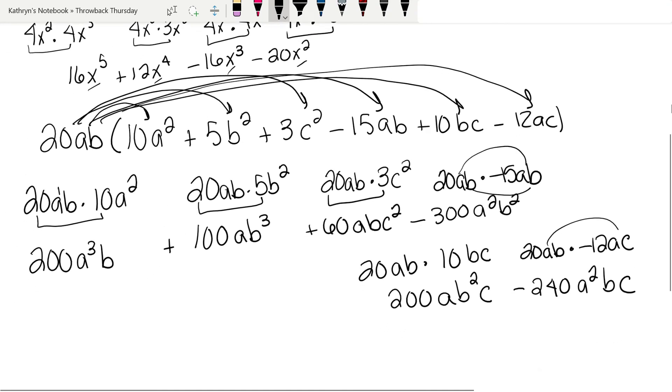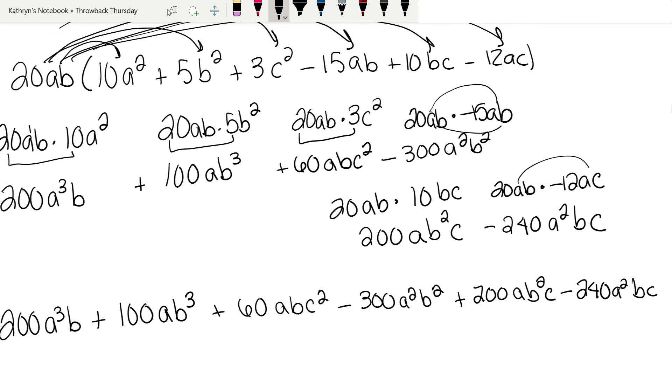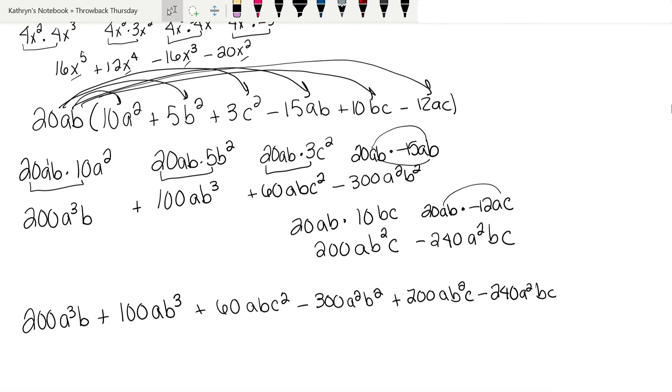Now let's put all of this together. We're going to have 200a³b plus 100ab³ plus 60abc² minus 300a²b² plus 200ab²c minus 240a²bc. And none of those are like terms. And so that is our solution for that one.